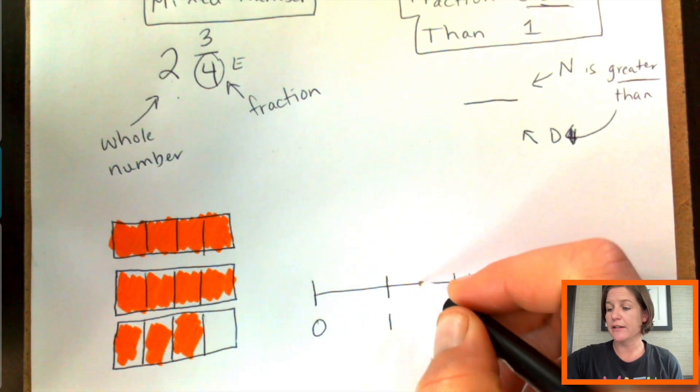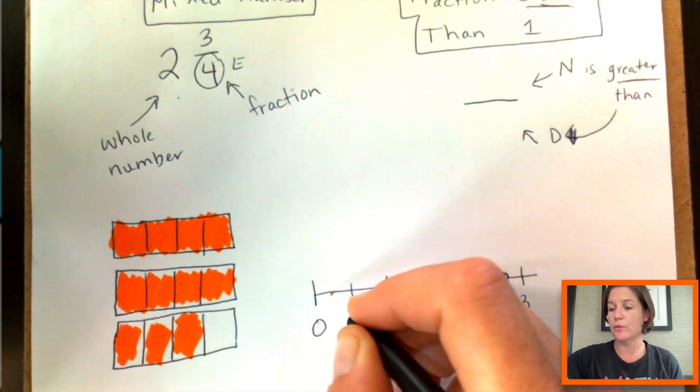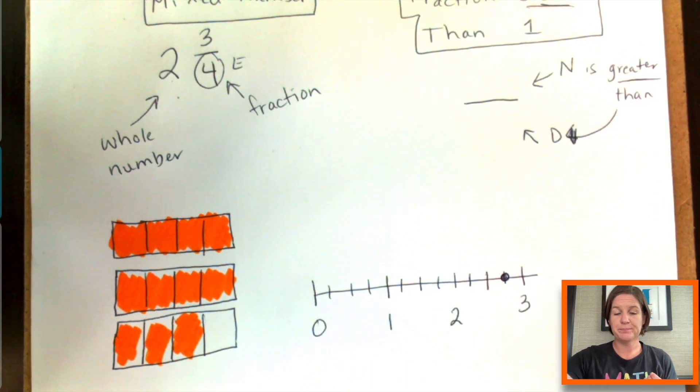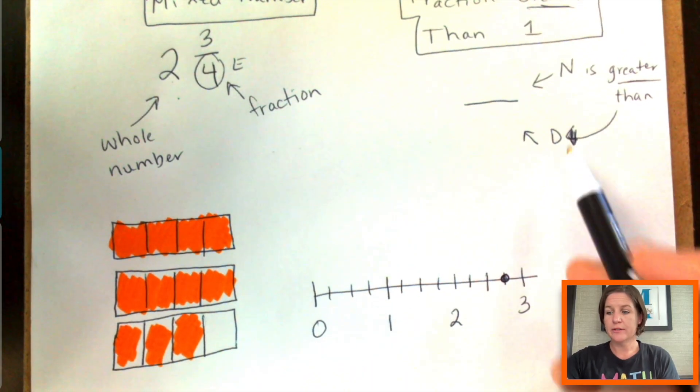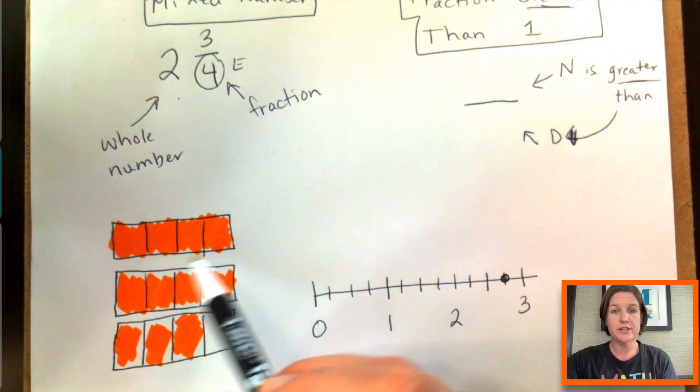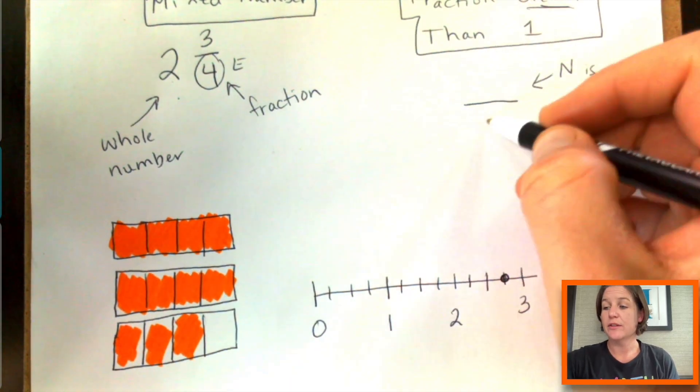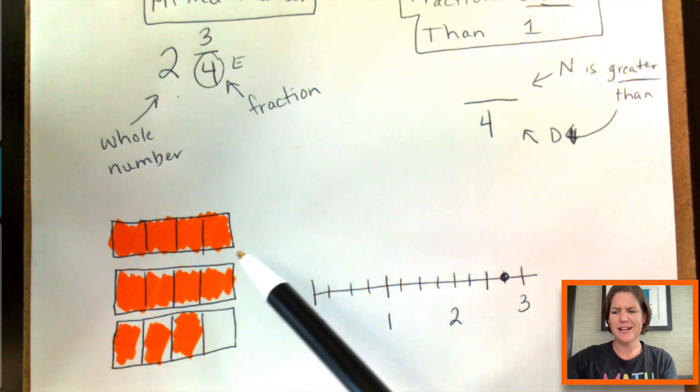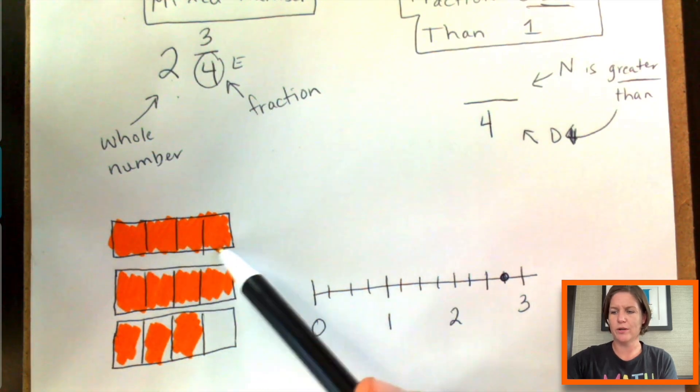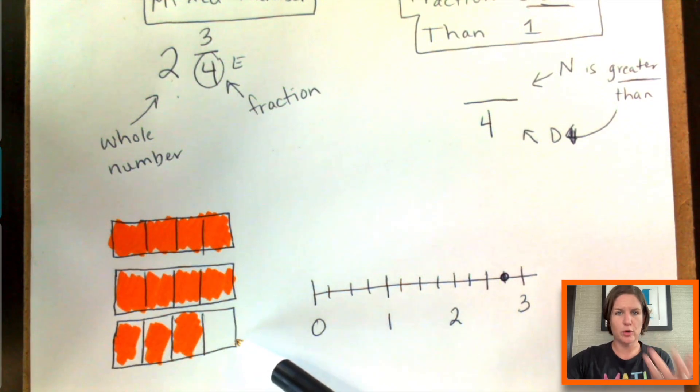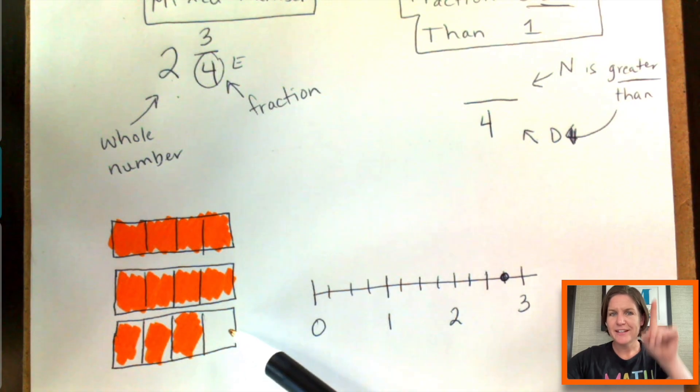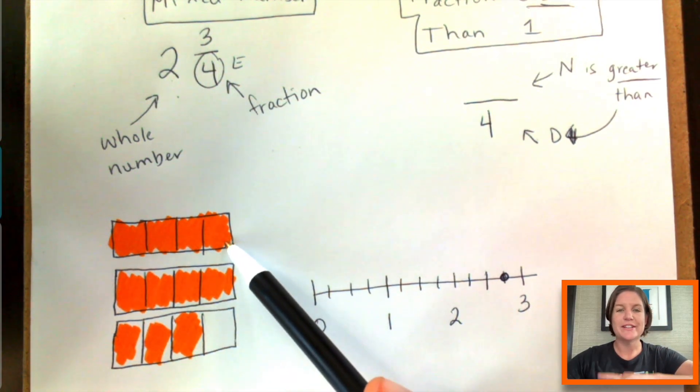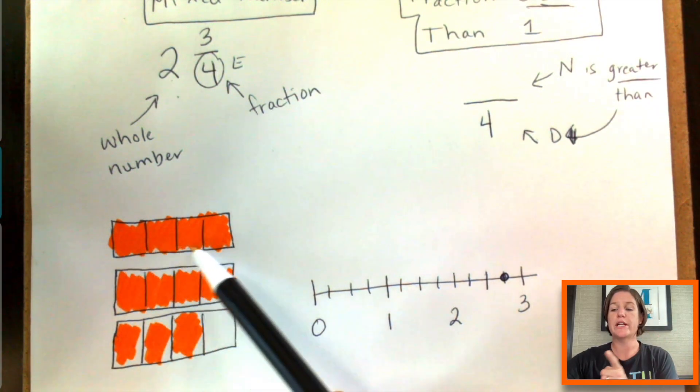So our denominator for all of these fractions is four. And some people might think, but I see 12 equal parts. I see four, eight, 12 total parts.